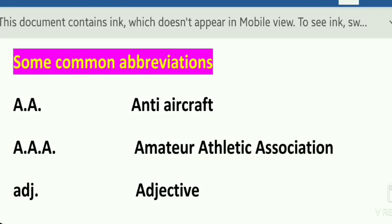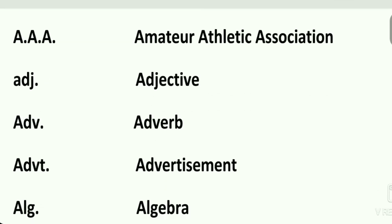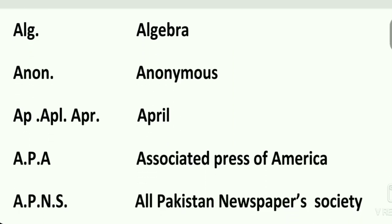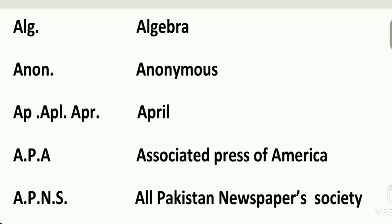Hello, Assalamu Alaikum. Today we study some common abbreviations. A.A. is the abbreviation of anti-aircraft. A.A.A. is Amateur Athletic Association. Adj. is adjective. Adv. is adverb. Advt. is advertisement. Alg. is algebra. Anon. is anonymous.